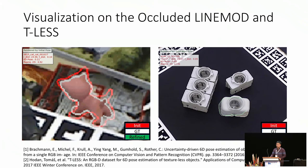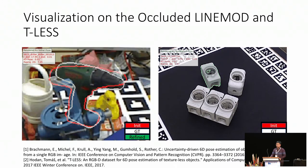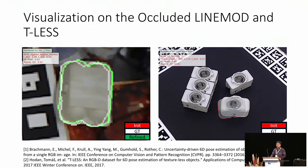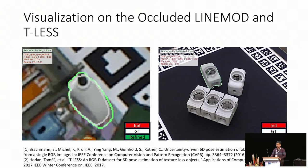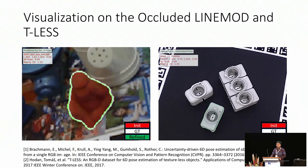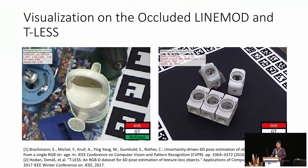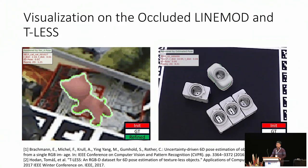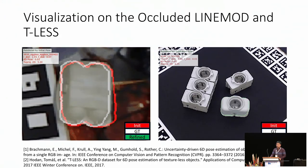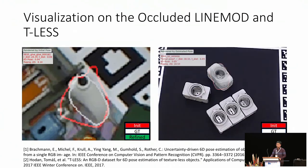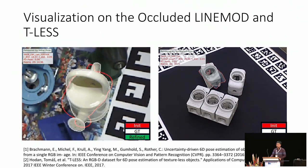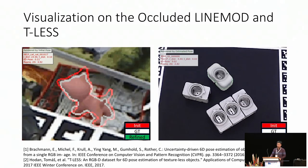We also tested our method on the Occluded LineMod dataset and the T-LESS dataset. Occluded LineMod dataset contains more occlusions than the LineMod dataset, and the T-LESS dataset contains objects which are textureless and symmetric. Here are two short videos to visualize our results on the Occluded LineMod dataset. The white line represents the contour of the ground truth poses, and the red line and the green line draw the contour of the initial poses and our refined poses separately.